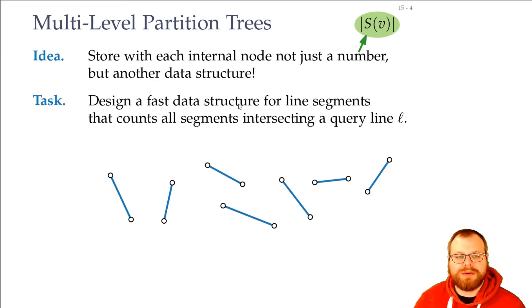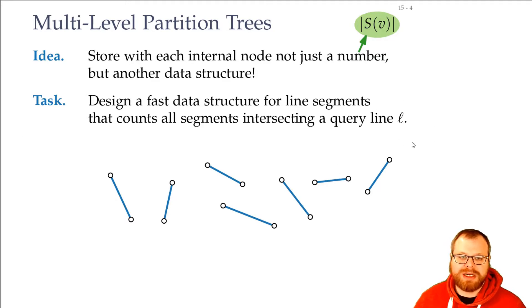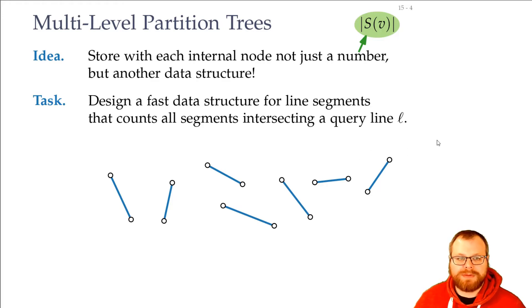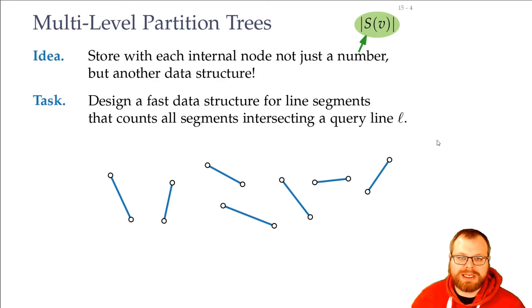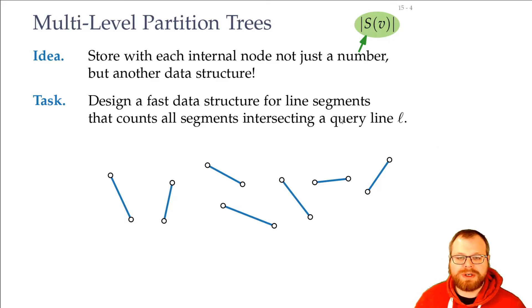So now my question is to you. Can you design a fast data structure for line segments? I just want to count all segments that are intersected by a query line. You can also do all segments that are completely inside a half plane and so on, but for now I just want to do intersection. How would you do it?